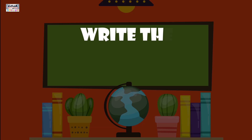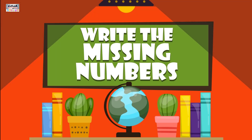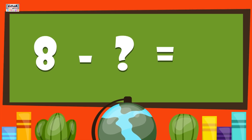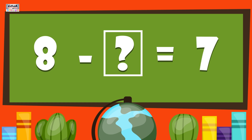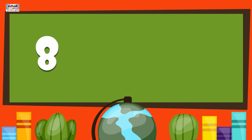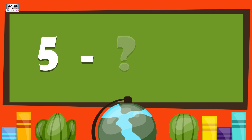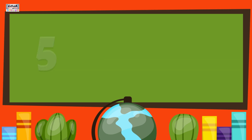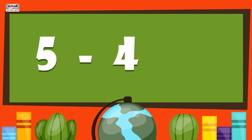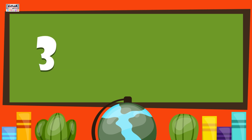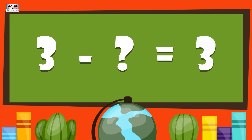Write the missing numbers. 8 minus what gives us 7? 8 minus 1 gives us 7. 5 minus what gives us 1? 5 minus 4 gives us 1.